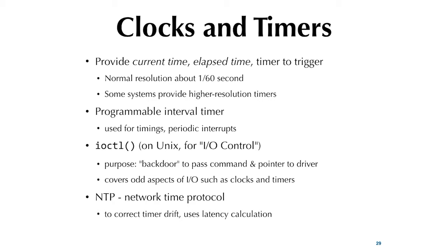Unix provides a couple of APIs for timers. Signal gives you an interface to timers and other events. IOCTL can be used for the more specific aspects of clocks and timers. Many OSes also support the Network Time Protocol, NTP, which gets the current time from a time server over the network. NTP handles network latency and can give a fairly accurate clock setting.